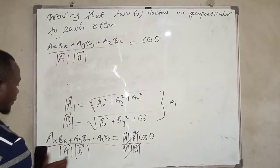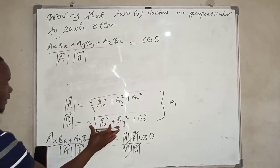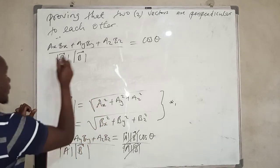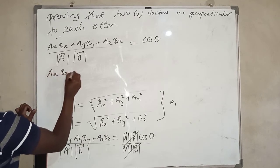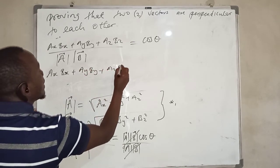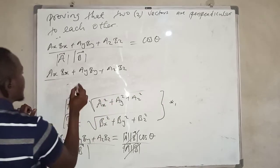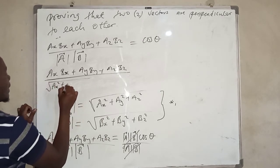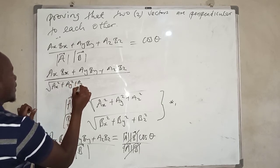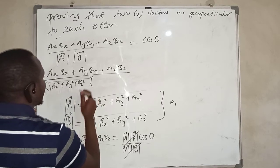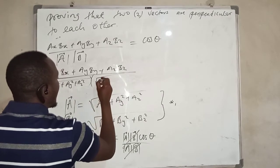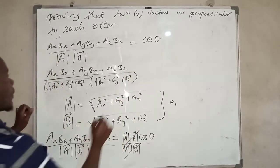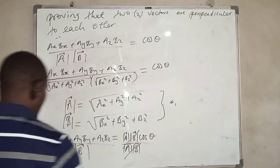Substituting the magnitude expressions, we get: cos theta equals ax*bx plus ay*by plus az*bz, divided by the square root of (ax squared plus ay squared plus az squared) times the square root of (bx squared plus by squared plus bz squared).